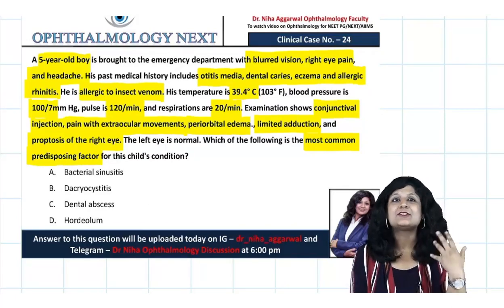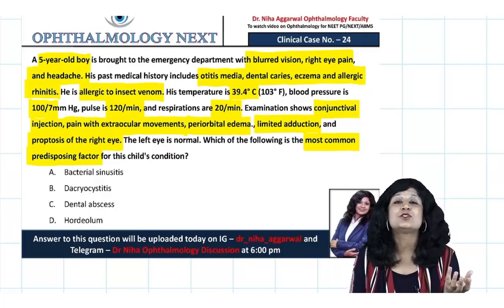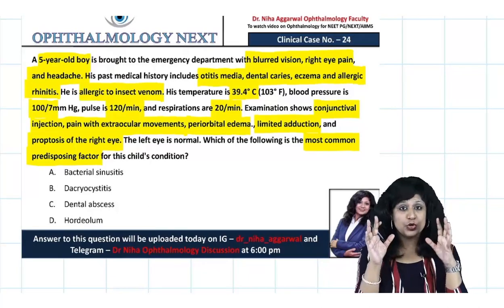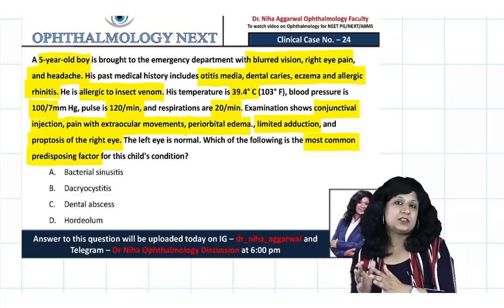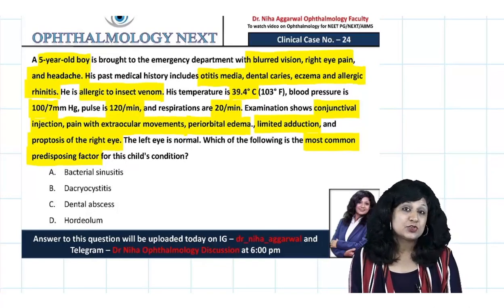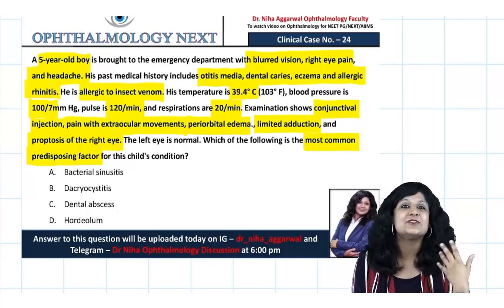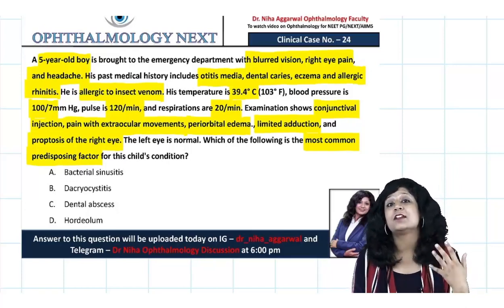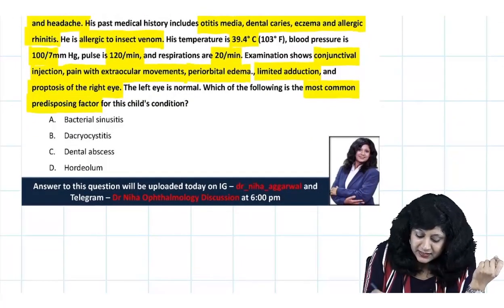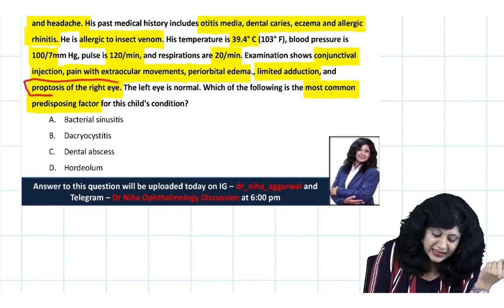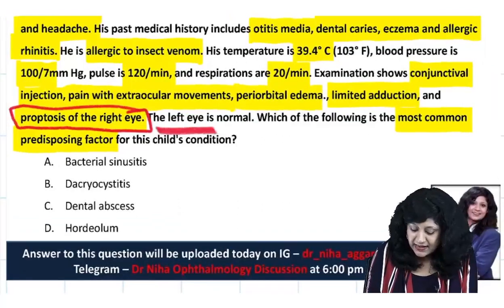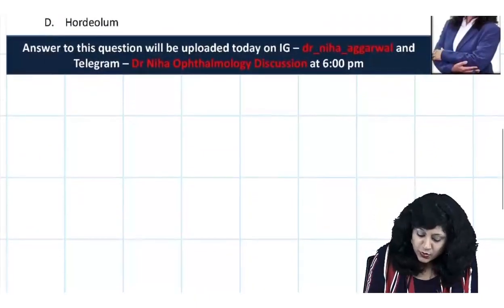There is something I always say in classes - you should know the catch point. Out of 100 pieces of information, you should know which one is the most important to pick, and based on that you will get the answer. This is actually the skill you develop after solving and practicing many questions. So here the clue point is that this five-year-old child has unilateral proptosis and the left eye is normal.